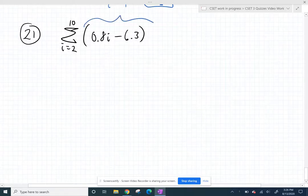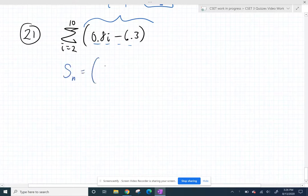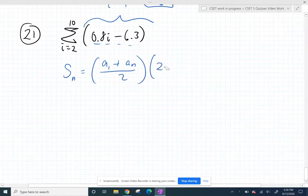Alright, we recognize our sequence as linear, y equals mx plus b, i is to the first power, so we're good to use our formula for the sum of an arithmetic sequence as the average of the first and the last terms times how many terms we have.